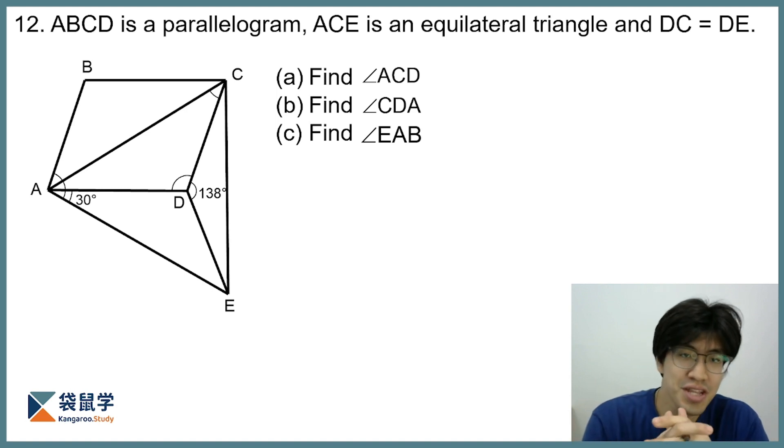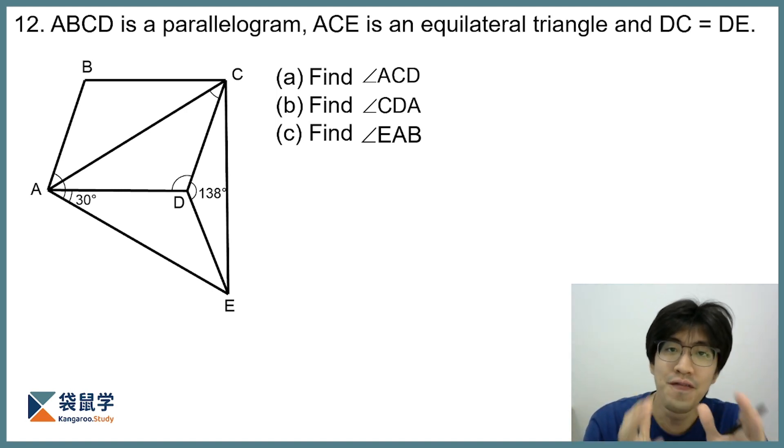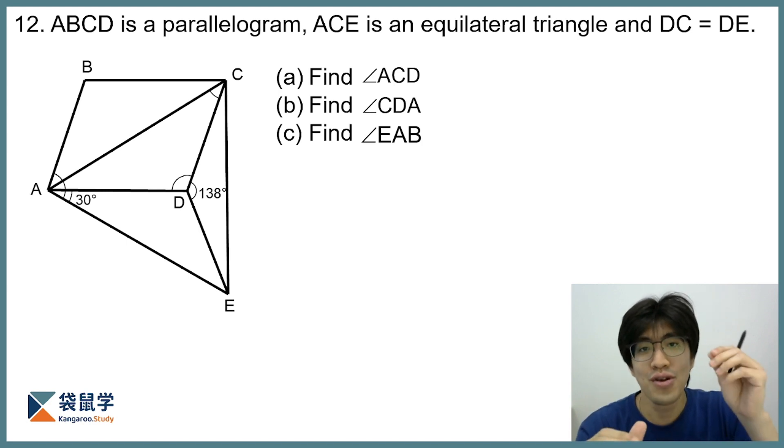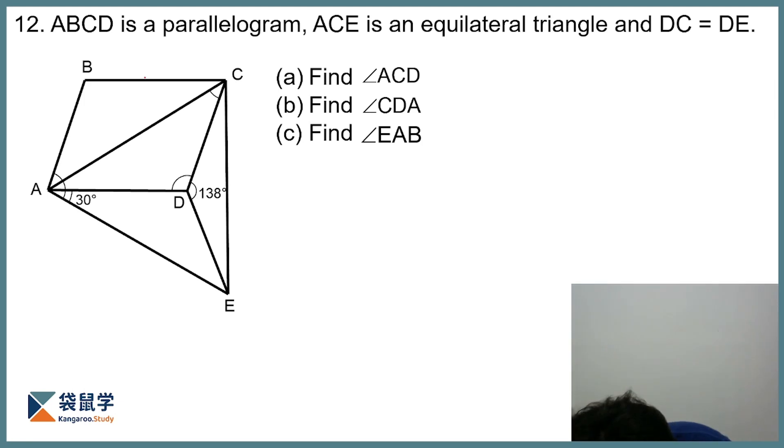Now before we jump right into this type of question, it is very important that you know for this type of geometry question, it is essential to label the given information as you read through the question. So let us follow that. ABCD is a parallelogram, now that tells me we have two pairs of parallel lines, let me label it. So AB and CD are parallel, and then BC and AD are parallel.